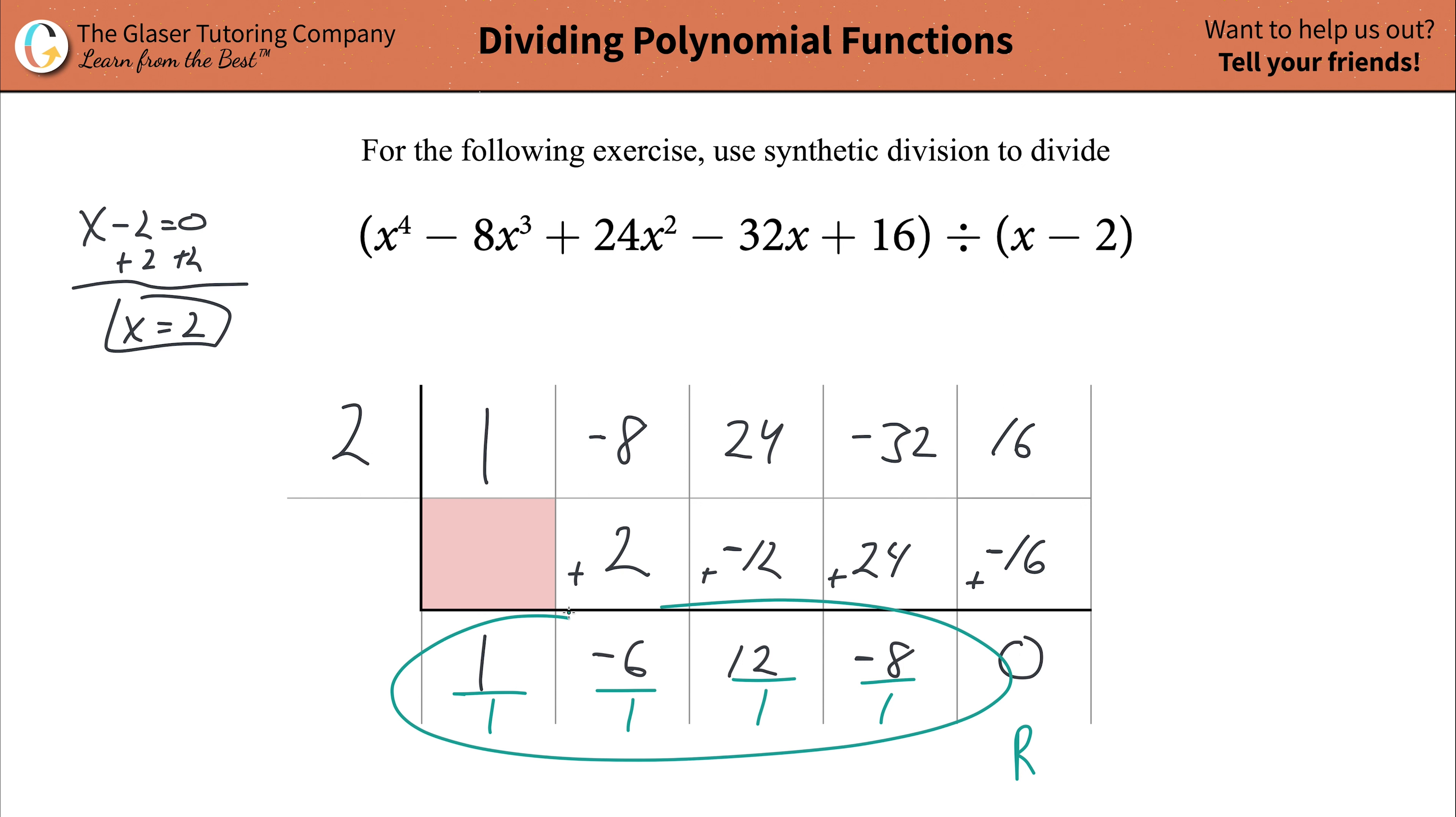Now, obviously, dividing everything by 1 doesn't do a darn thing. But at least if the problem changes now, if this becomes a 2, you know how to approach it. I need you to think through that. For example, if this were a 2, if everything were a 2, then these new values would be: this would be 1 half, this would be negative 3, this would be 6, and this would be negative 4. Those would be your new values, and those would be the coefficients. In any case, let's write this back.